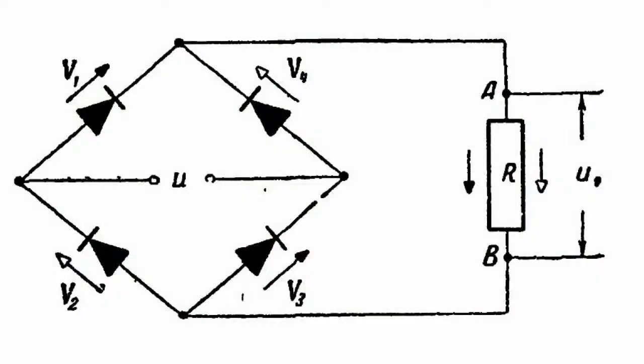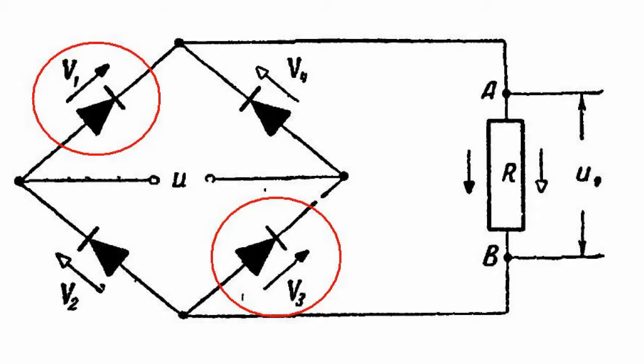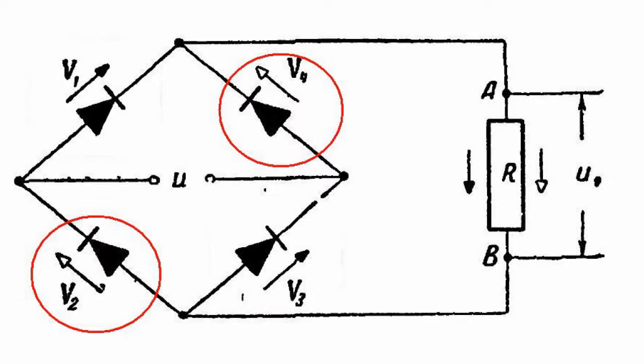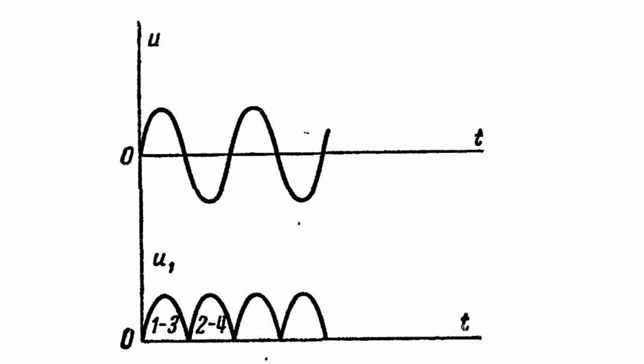In order to use AC voltage in a more efficient way, the double-period rectification circuit is used. The current of load R always runs in the same direction. It passes through rectifiers V1 and V3 during one half-period, and through rectifiers V2 and V4 during the second. The load voltage retains its sign and has a frequency equal to double the frequency of the power supply voltage.